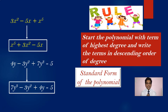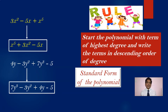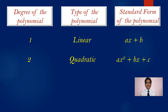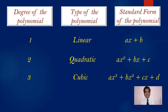This is called the standard form of the polynomial. The standard form of a linear polynomial is ax plus b. The standard form of a quadratic polynomial is ax² plus bx plus c. And the standard form of a cubic polynomial is ax³ plus bx² plus cx plus d, where a, b, c, d are real numbers and a cannot be equal to 0.